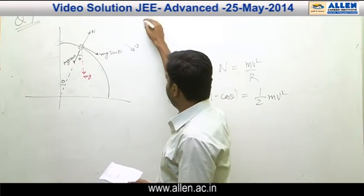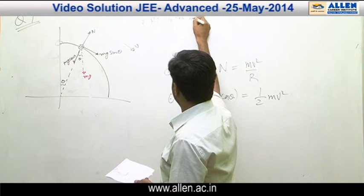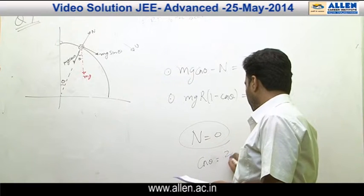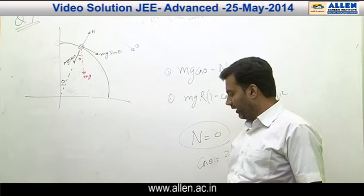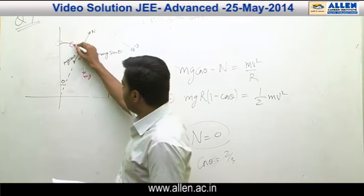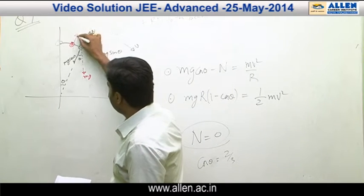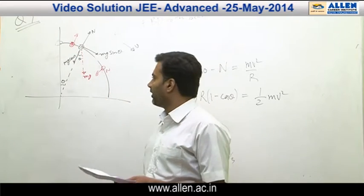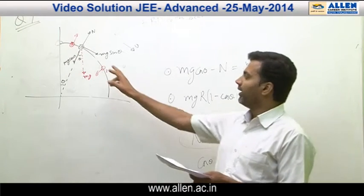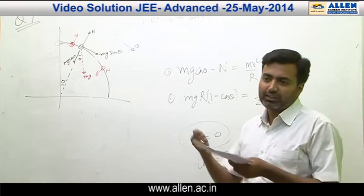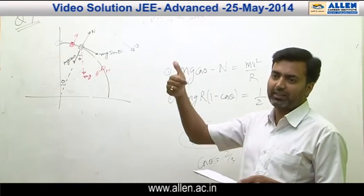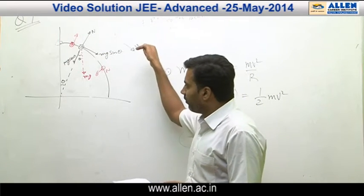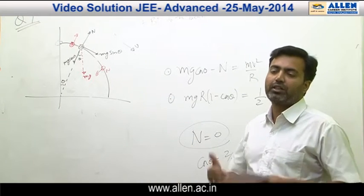This diagram is the FBD for the bead. Setting N equals zero, we find cosθ equals 2/3, which is the angle where normal becomes zero. At angles before this, the normal reaction acts outwards on the bead because the speed is less, requiring less centripetal force, so mg·cosθ minus N is adjusted with N acting outward. After this angle, the normal reaction acts inwards on the bead, providing the enhanced centripetal acceleration required.